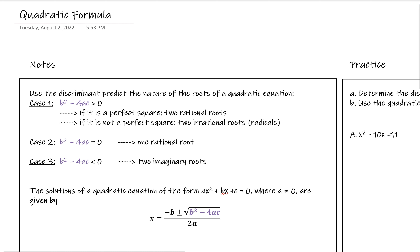The first thing we're going to talk about is the discriminant of the quadratic formula, which is the part inside the radical when we have our quadratic formula. We can use the discriminant to predict what kind of roots we're going to have, and that's also going to help us know what to look for when we're actually using the formula overall.